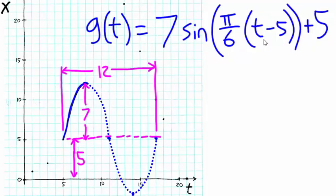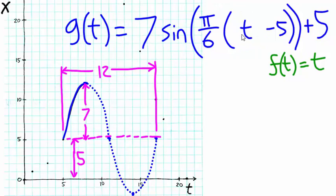Let's think of the input t as a function f of t in its own right. Then we could substitute f of t in for t, and we see that we now have our composite function. f of t has been plugged into the sinusoid equation.